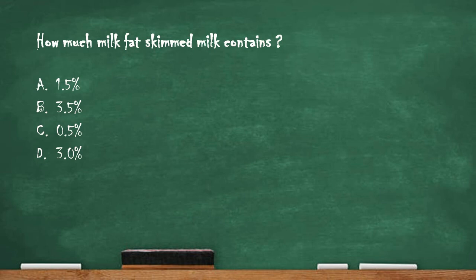Next question: how much milk fat does skimmed milk contain? Option A: 1.5 percent. Option B: 3.5 percent. Option C: 0.5 percent. Option D: 3.0 percent. The right answer is option C — 0.5 percent. Skimmed milk contains 0.5 percent milk fat.